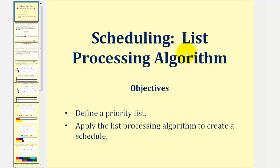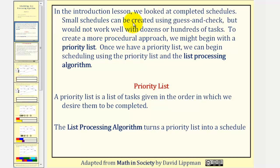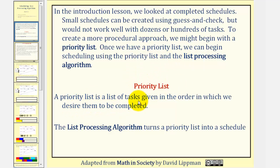Welcome to a lesson on the list processing algorithm for scheduling. In the introduction lesson, we looked at completed schedules. Small schedules can be created using guess and check, but that would not work well with dozens or hundreds of tasks. To create a more procedural approach, we might begin with a priority list. Once we have a priority list, we can begin scheduling using the list processing algorithm, where a priority list is a list of tasks given in the order in which we desire them to be completed. The list processing algorithm turns a priority list into a schedule.